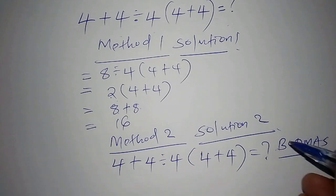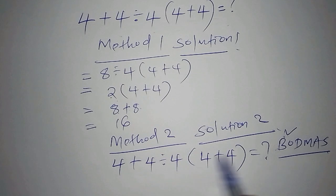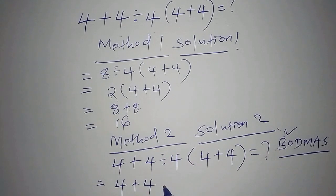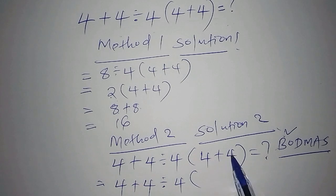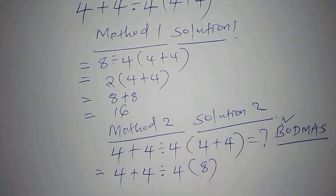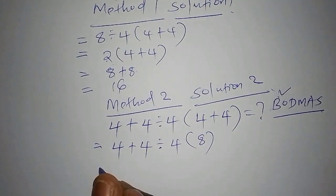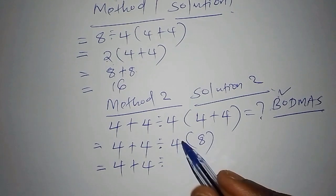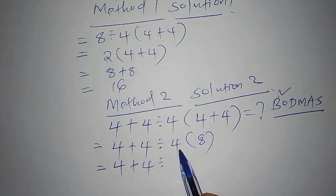So let's look at BODMAS keenly. B stands for Bracket. Solving Method Two using BODMAS, it directs me to solve the bracket first. So: four plus four divided by four, multiplied by bracket — when I solve the bracket, four plus four is eight inside the bracket. Moving to the second step, we open the bracket and have four plus four divided by four, multiplied by eight.